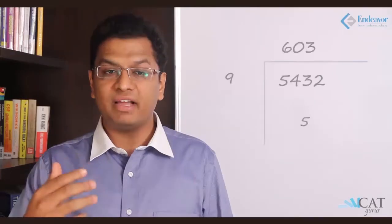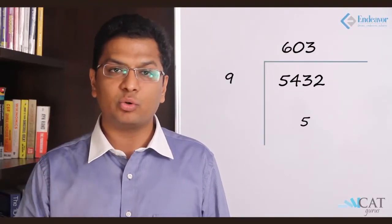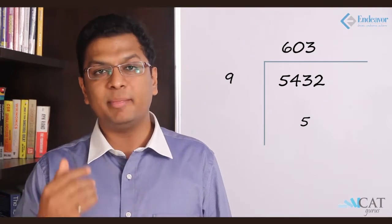Let us look at a question. How exactly is it done? 5432 is divided by 9. 5432 when divided by 9 will give me a quotient of 603 and the remainder will be 5.